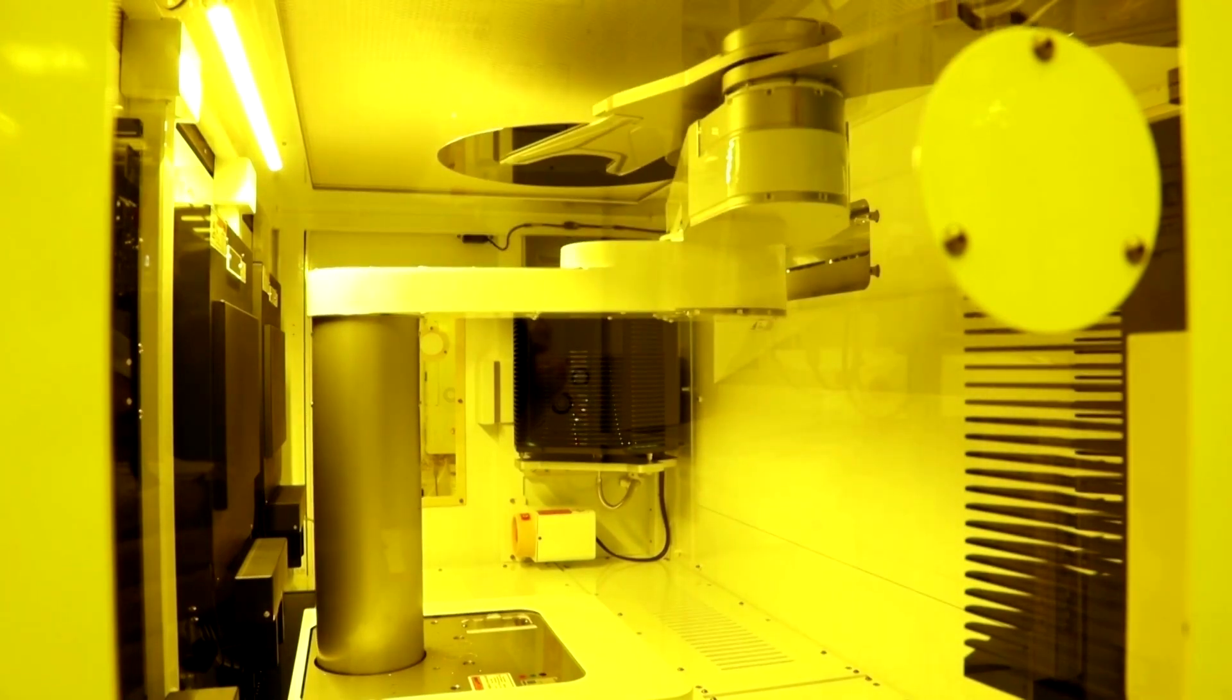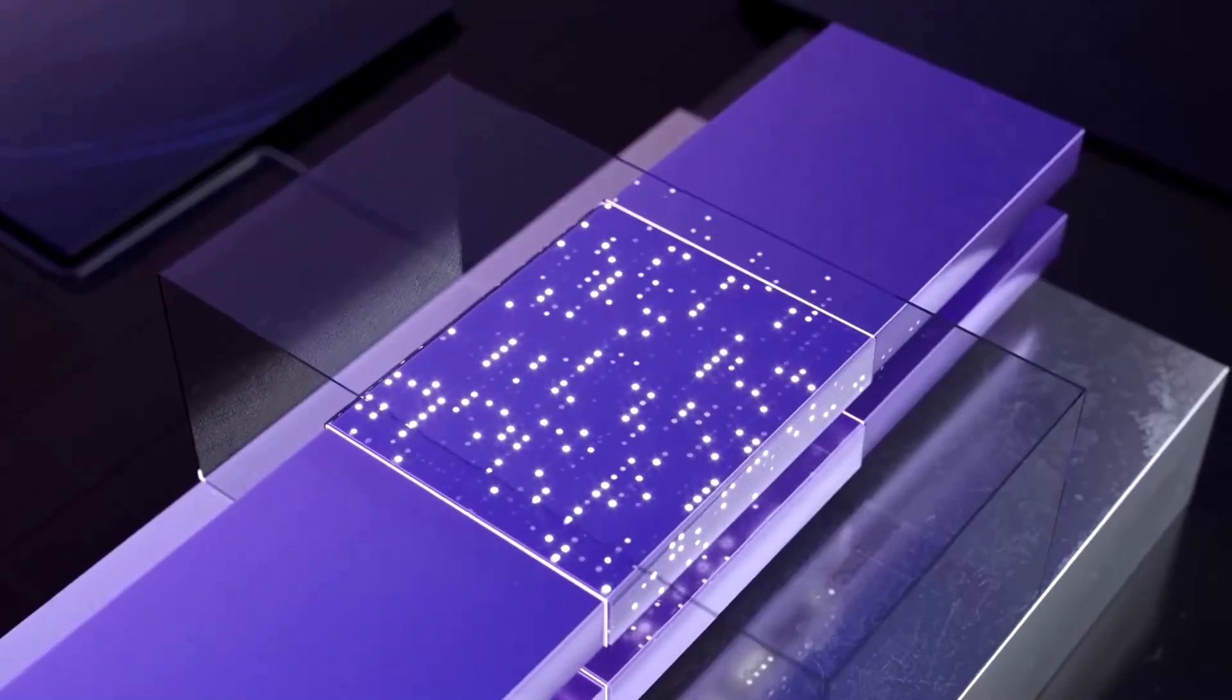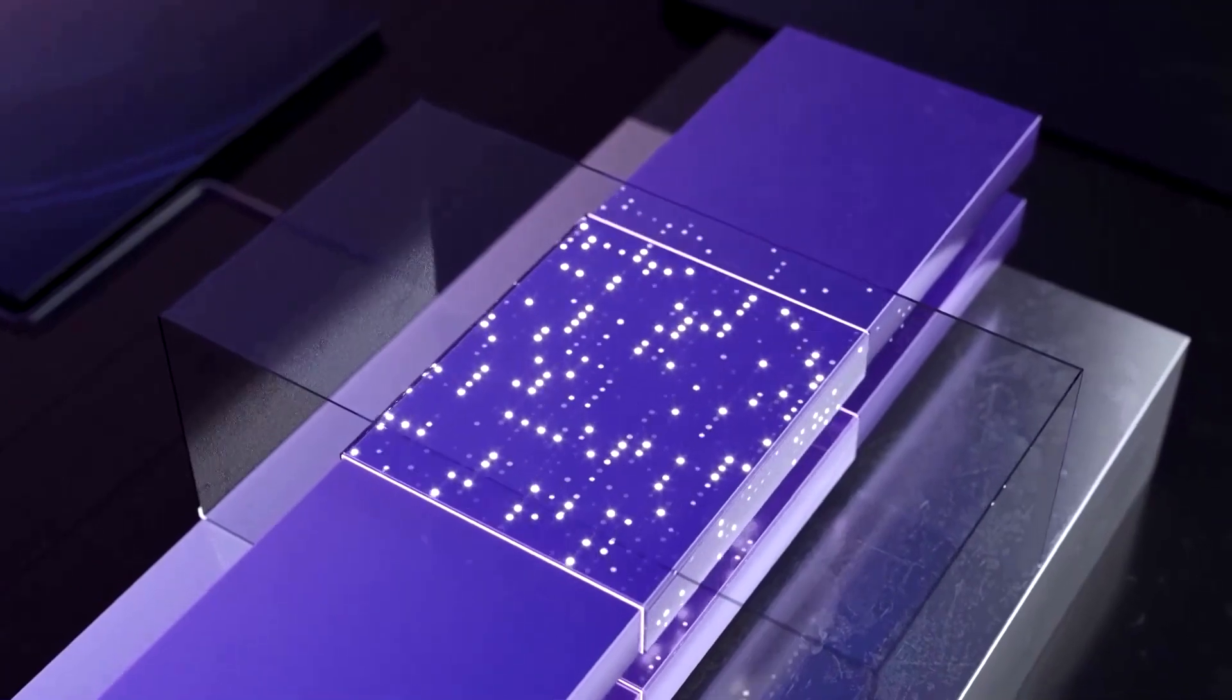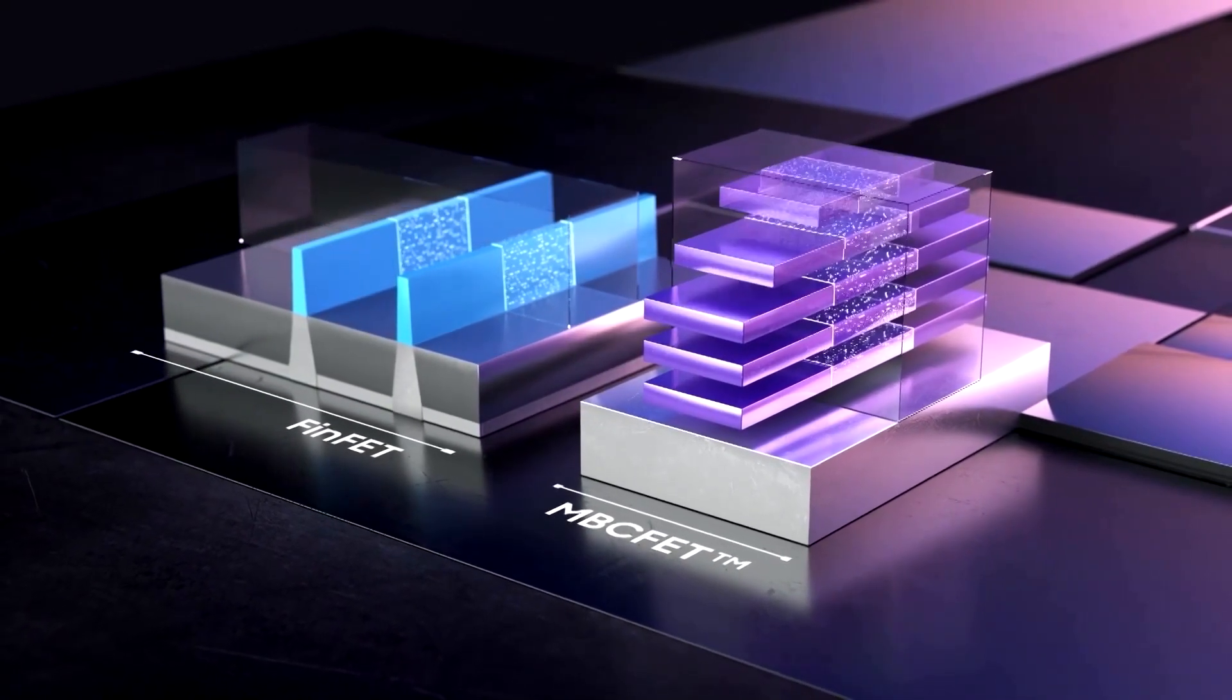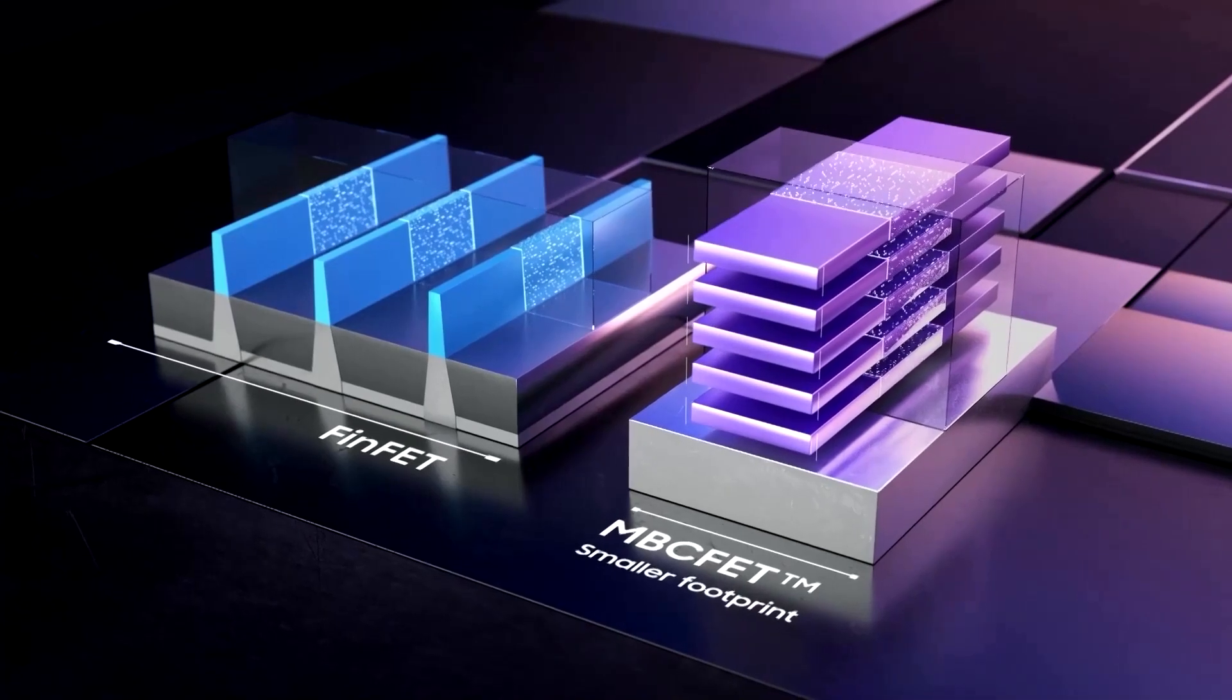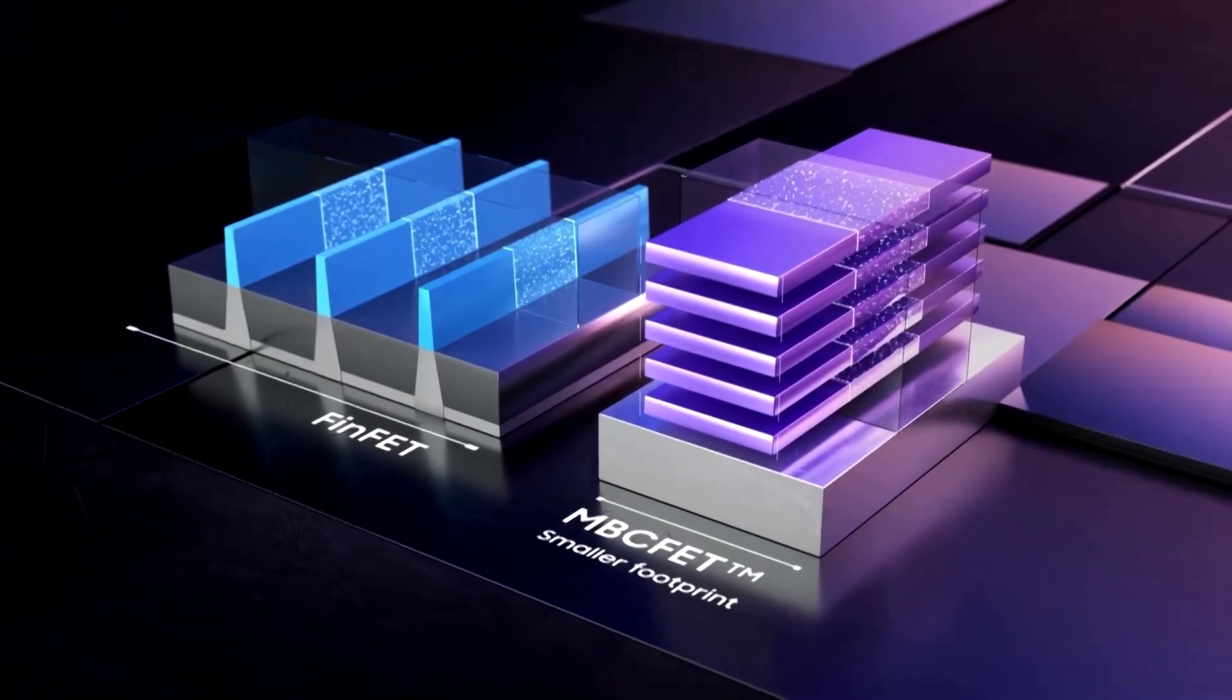Currently, conventional chips use the 5-nanometer design. But Samsung said its newly developed 3-nanometer process is almost twice as power-efficient and is said to improve performance by more than 20%. Samsung is aiming to overtake TSMC as the world's top chip-maker by 2030.